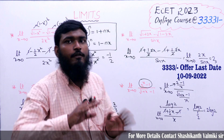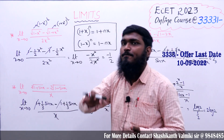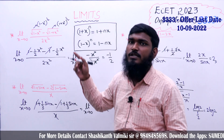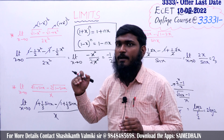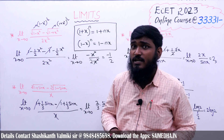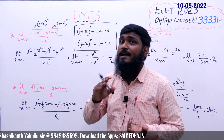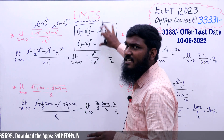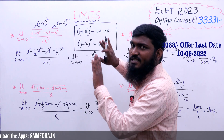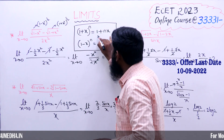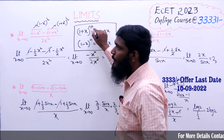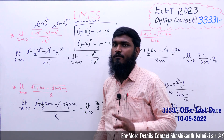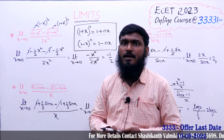With this we have completed the two shortcuts in the topic of limits. The first shortcut: when the conditions — same mth roots, same x^n powers, same a value — are satisfied, the answer is 2 divided by m into a to the power of (1 minus 1 by m). The second shortcut: when roots or x powers differ, use (1 + x)^n equals 1 plus nx, and (1 - x)^n equals 1 minus nx. Thank you very much.